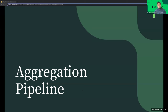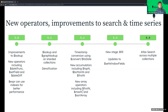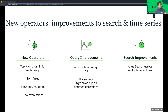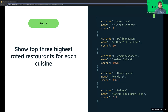Moving on to the final section: the aggregation pipeline. We just spoke about how change streams leverage the aggregation pipeline. As most of you would know, the aggregation pipeline opens up powerful and expressive querying throughout MongoDB. Since 5.0, we've had a number of new operators. We will focus on new operators, query improvements, and improvements to search.